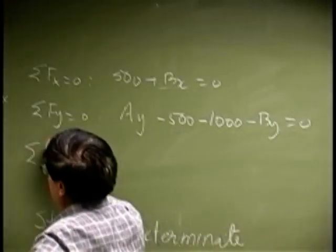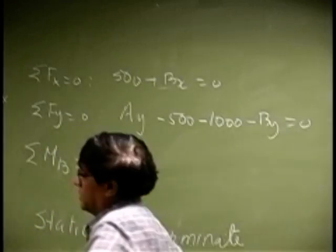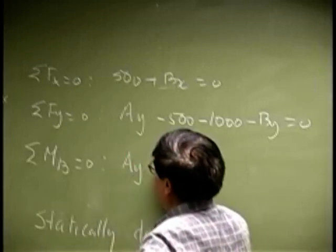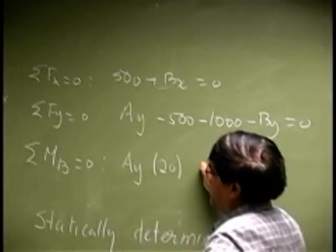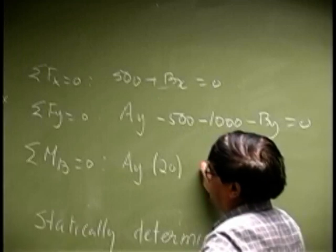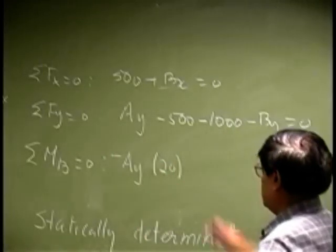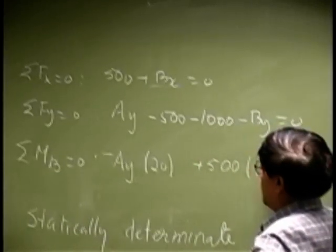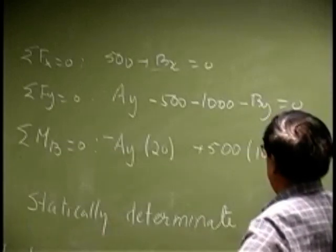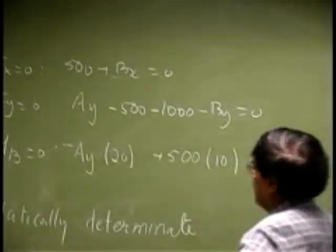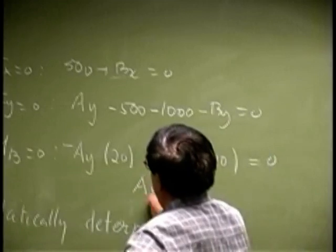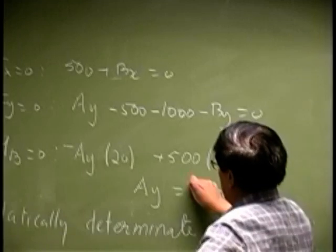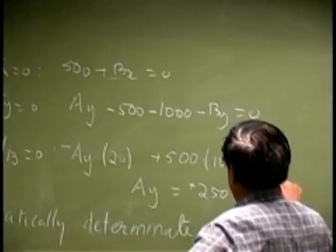Then we sum the moments. And let's sum this about B. This is going to give you Ay times 20. Then this is going one direction and this is counterclockwise, so let's make it negative plus 500 times 10, and that is about eight. So that goes to zero. So that gives you Ay as 250 pounds. It came out positive, it stays going up.